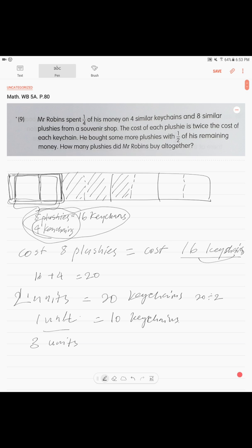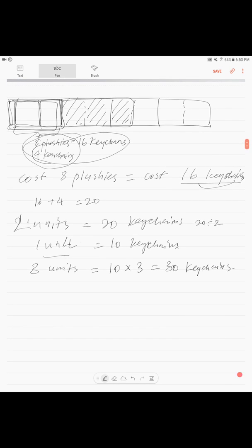3, these units that we marked, 3 units is 10 times 3. 30 keychains, 30 keychains.